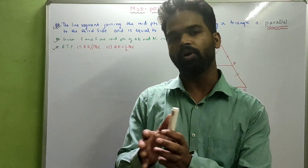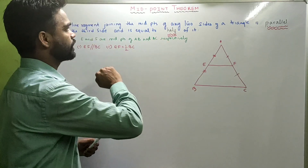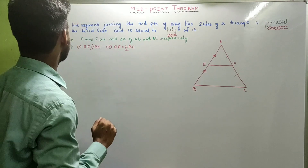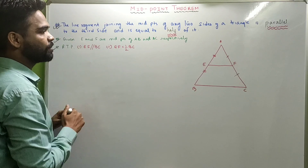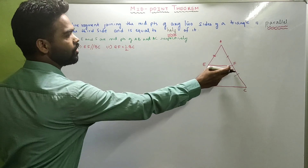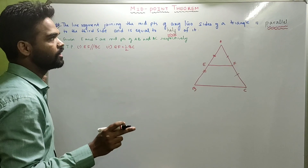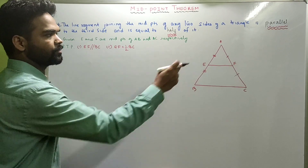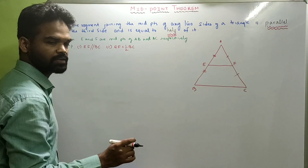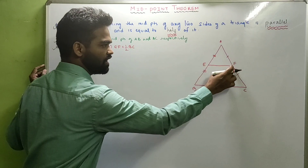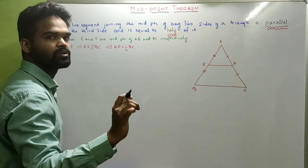Hi class, we have done a lot of properties on triangles. Today, let us see a very interesting theorem — the Midpoint Theorem on triangles. First of all, let us read the statement of the theorem: The line segment joining the midpoints of any two sides of a triangle is parallel to the third side and is equal to half of it. Suppose ABC is a triangle. E and F are the midpoints of AB and AC respectively. Then EF will be half of BC and EF is parallel to BC.